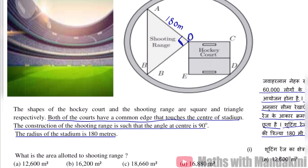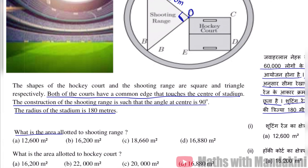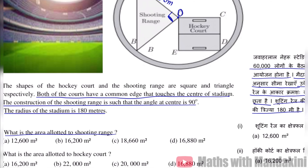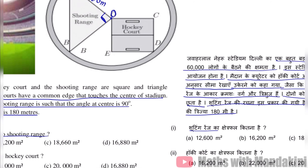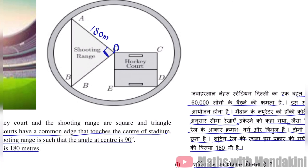Ab question kya hai? First question hai: what is the area allotted to shooting range? Yani shooting range ka shetrifal kitna hai? Toh ab sabse pahle hum yaha dekhte hai humara jo figure hume diya hua hai. Shooting range jo hai woh hai ek tribhuj ke aakar mein, yani ek triangle ke aakar mein. Toh triangle ka hume area nikalna hoga agar hume shooting range ka area chahiye toh.